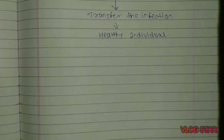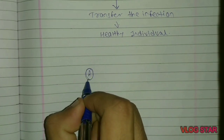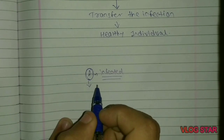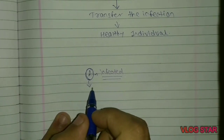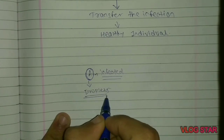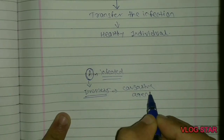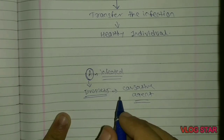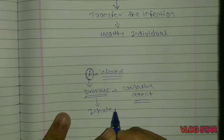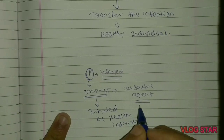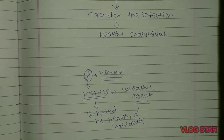There is one more point regarding the spread of infection. The infection in diphtheria may usually get transferred through airborne droplets. When an infected patient sneezes or coughs, it releases a mist of contaminated droplets containing the causative agent. When these droplets are inhaled by healthy individuals, the causative agent enters the healthy individual and transmission of infection occurs.